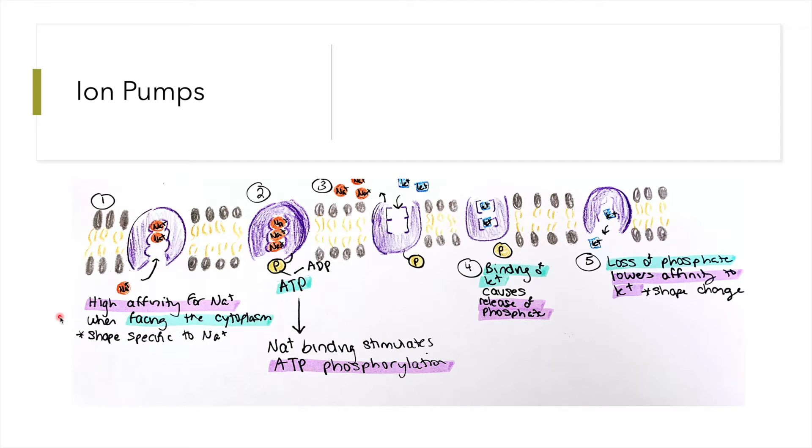Ion pumps are also known as electrogenic pumps because they generate voltage across the membrane due to ions being charged particles.